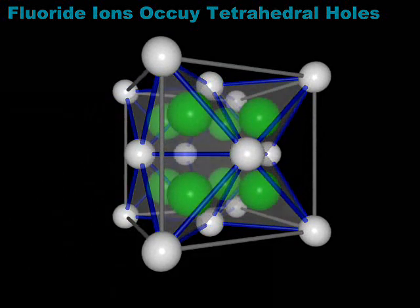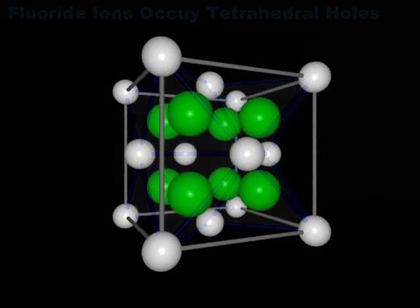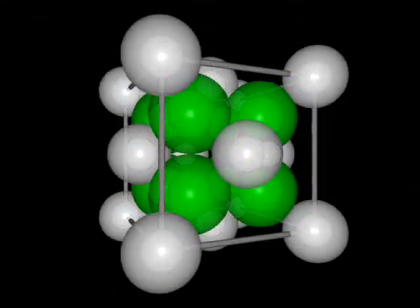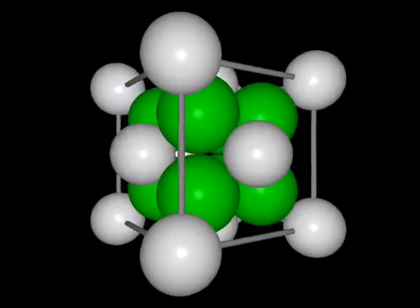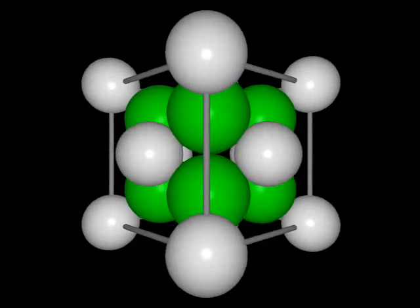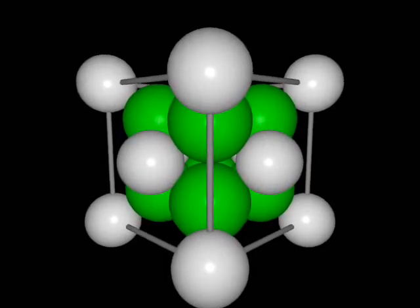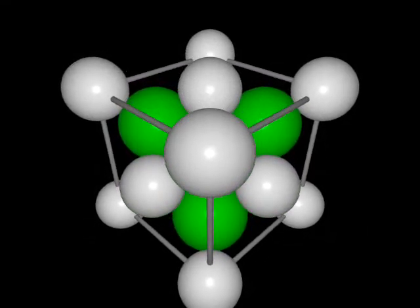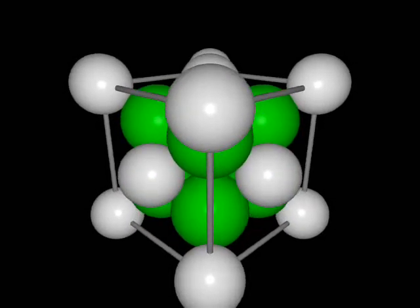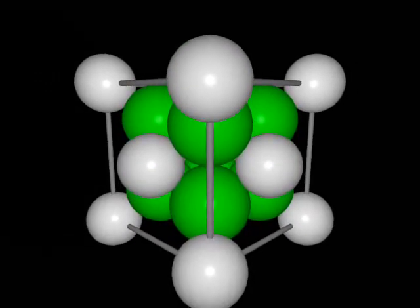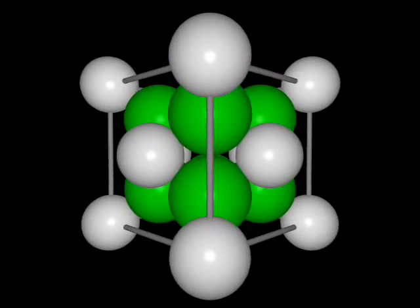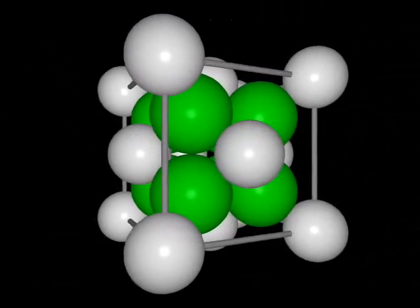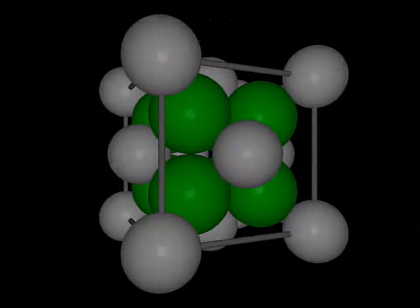Let us examine a space-filling model of the fluorite structure. The space-filling model shows us that the array of calcium ions is greatly expanded to accommodate the fluoride ions. The primary reason for the adoption of this arrangement is stoichiometry.